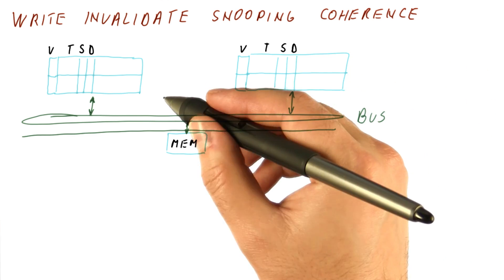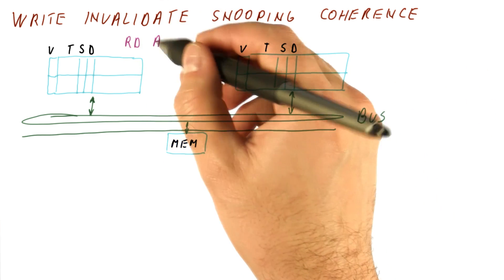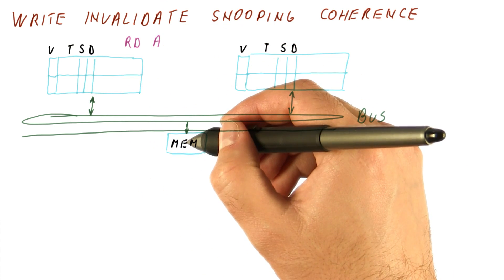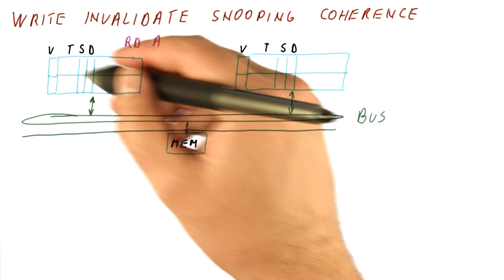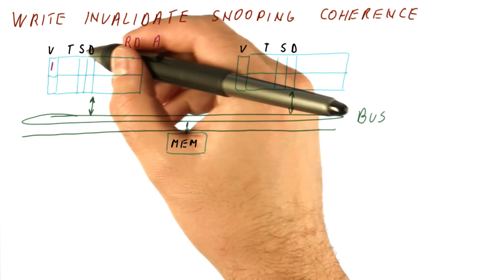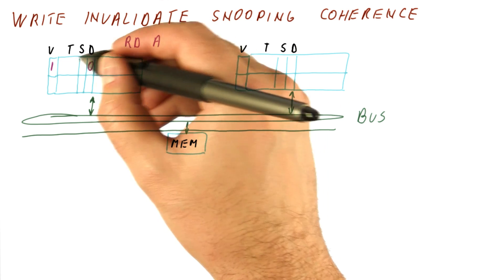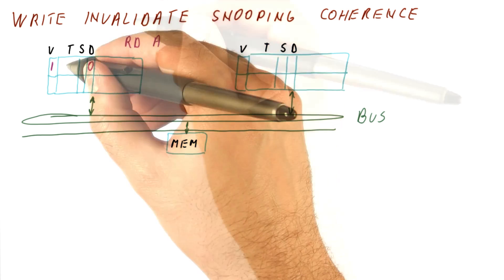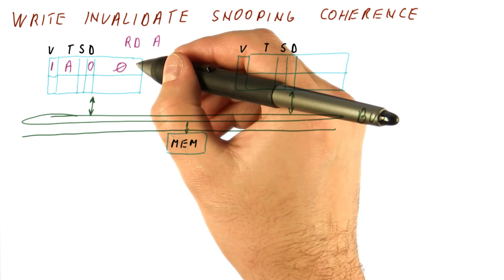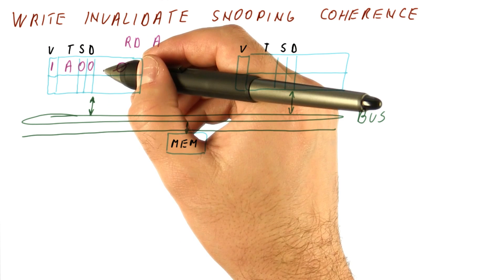Let's see how this works. Say this core reads A — we send the request and get the value from memory. Now we have it as valid, not dirty. The tag is A, the value is zero, and it's not shared.